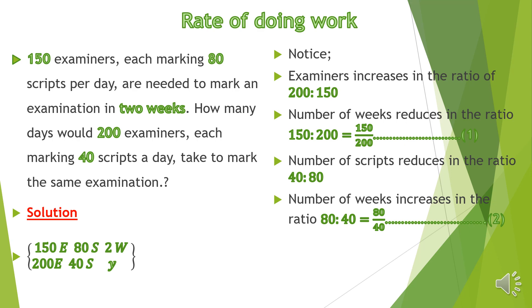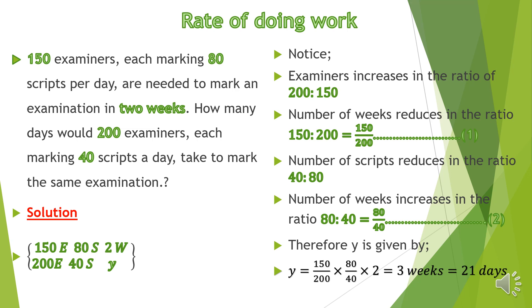With these two equations, the value of Y is obtained by multiplying 80 over 40 times 150 over 200 times the given time of two weeks. So Y equals 150 over 200 times 80 over 40 times two weeks, giving us three weeks. Since a week has seven days, three weeks equals 21 days. Therefore, 200 examiners each marking 40 scripts a day will take 21 days to mark the same examination.